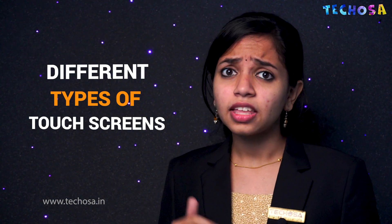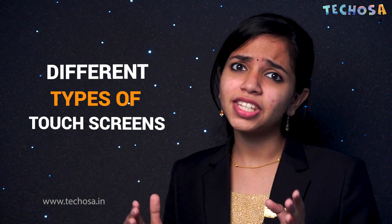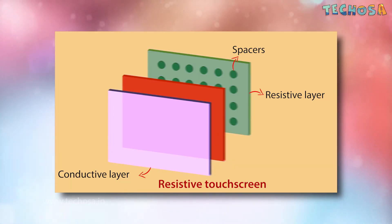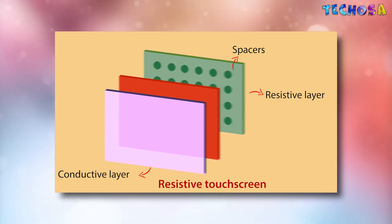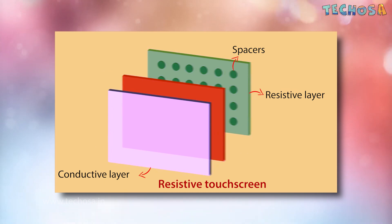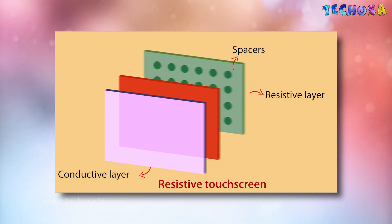But is the touchscreen you use at an ATM the same as the touchscreen on your phone? Well, not really — there are different types of touchscreens. Let's look at the different types and how they work. The first is the resistive touchscreen, today's most widely used touch technology. A resistive touchscreen monitor is composed of a glass panel and a film screen.